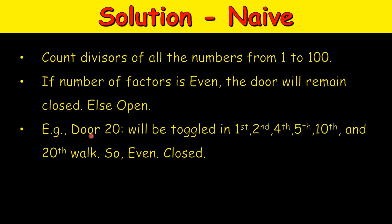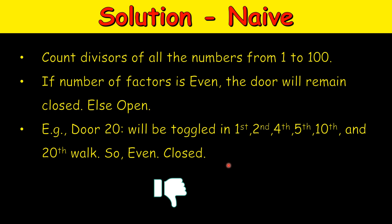For example, the factors of 20 are 1, 2, 4, 5, 10, and 20. So door number 20 will be toggled in the 1st, 2nd, 4th, 5th, 10th, and 20th walk. The number of factors is 6, which is even, so door 20 will remain closed. This approach is correct but not recommended.